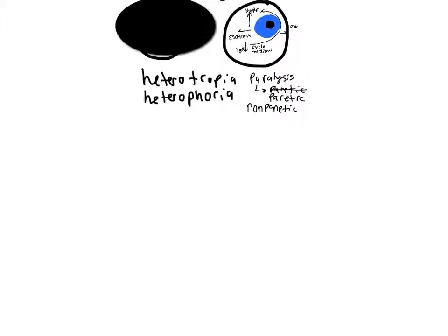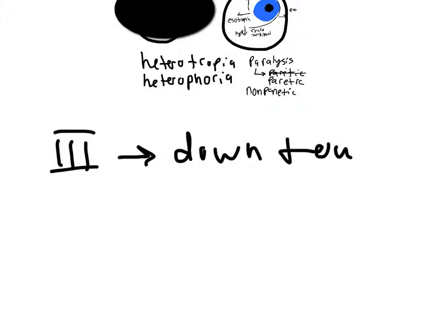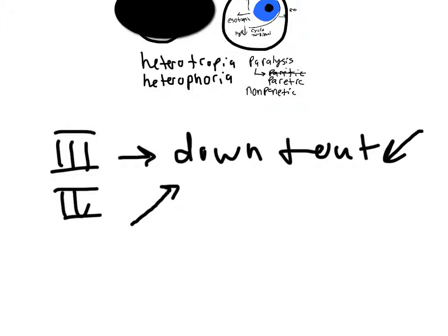Strabismus can be due to a number of different things. With cranial nerve impairment, cranial nerve 3 gives you a down-and-out gaze. With cranial nerve 4 impairment, you get a gaze that's up and slightly inward to the impaired eye. With cranial nerve 6, you get an inward gaze to the affected eye.